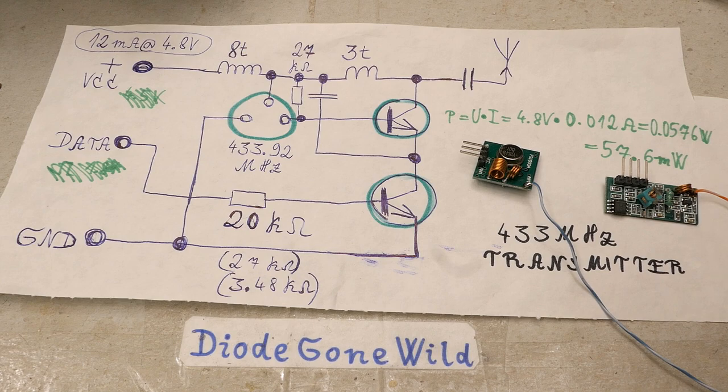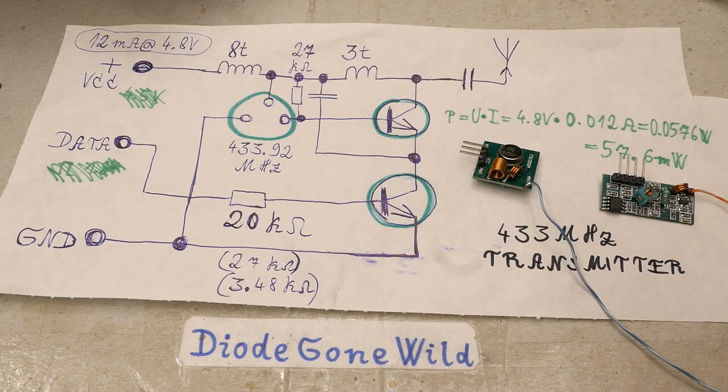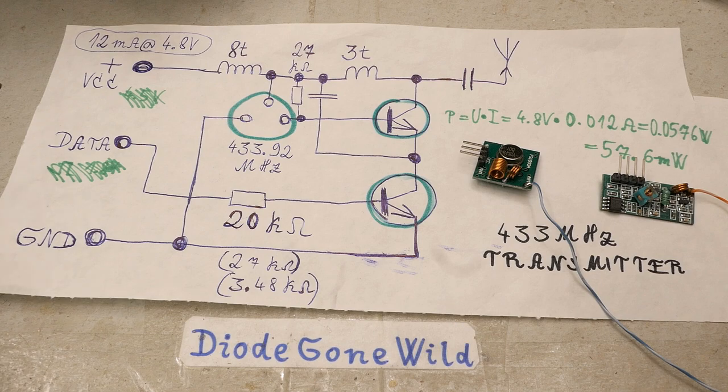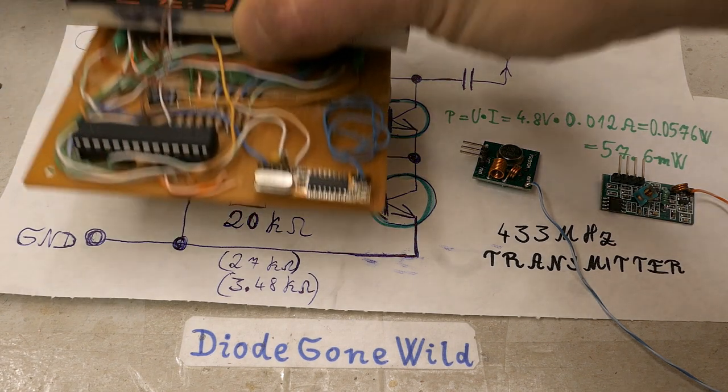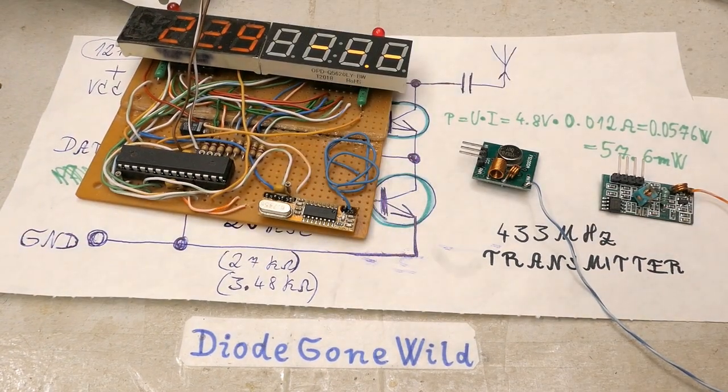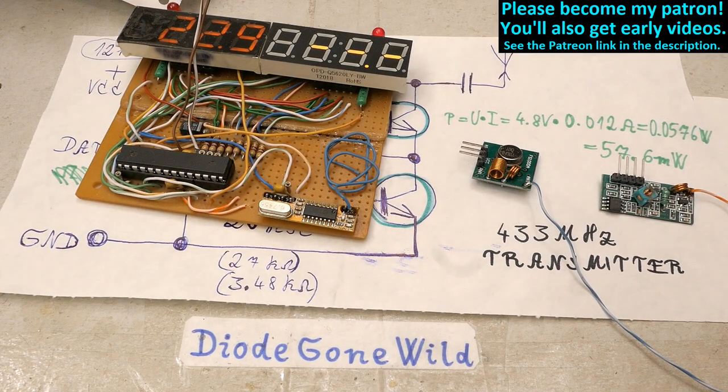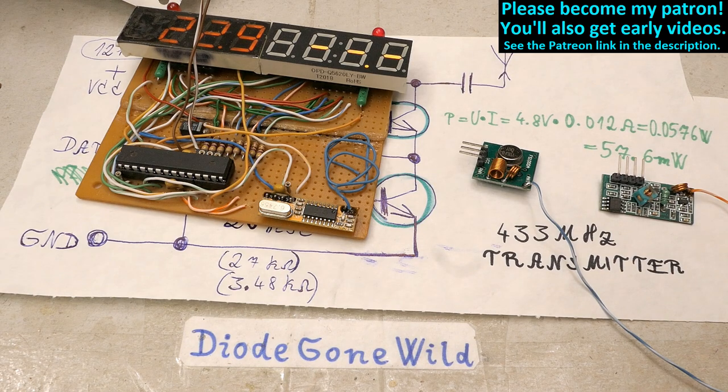So that's these eBay modules for well under a dollar, including shipping, both of them. I might try some other modules in the future. I will also show how I'm using RF modules in my wireless thermometer. So that's it and please consider supporting this channel on Patreon or using the thanks button. Big thanks to all of you who already support me.